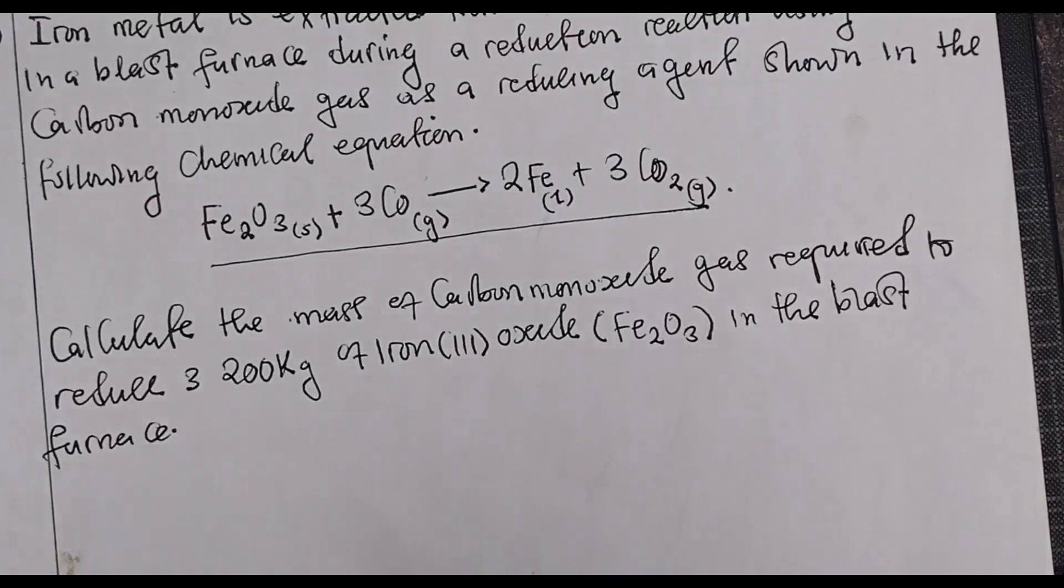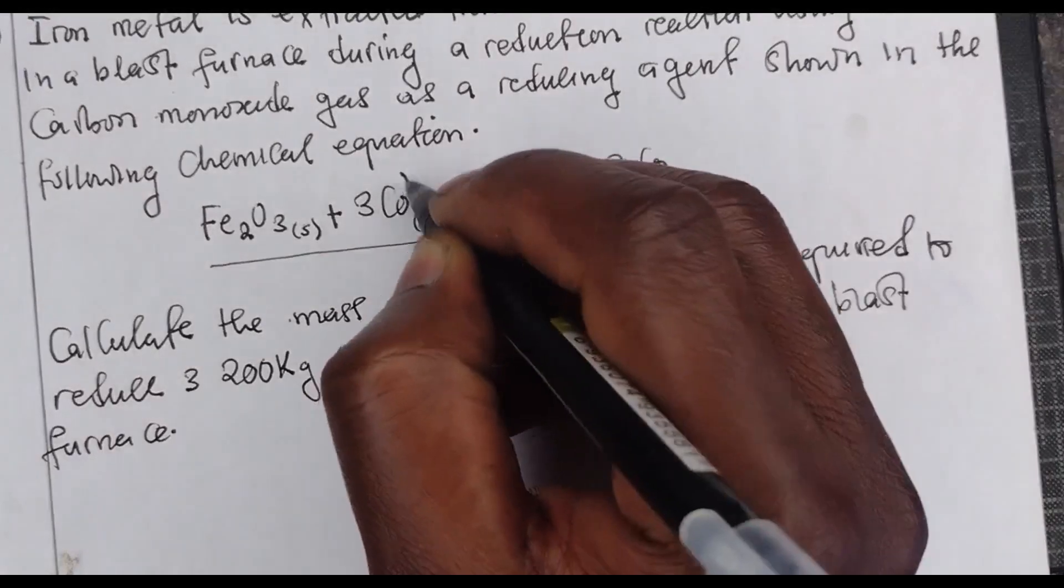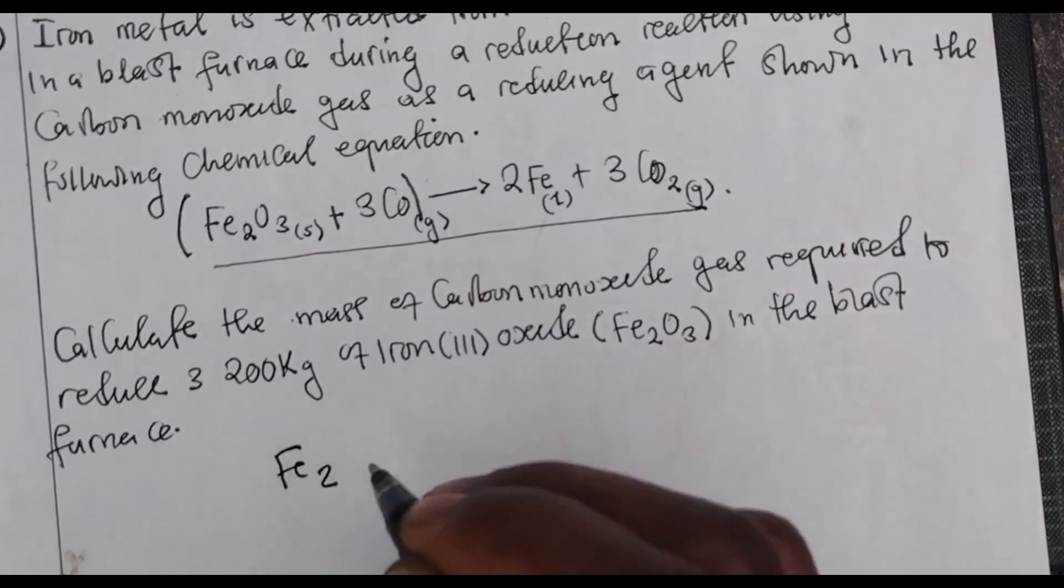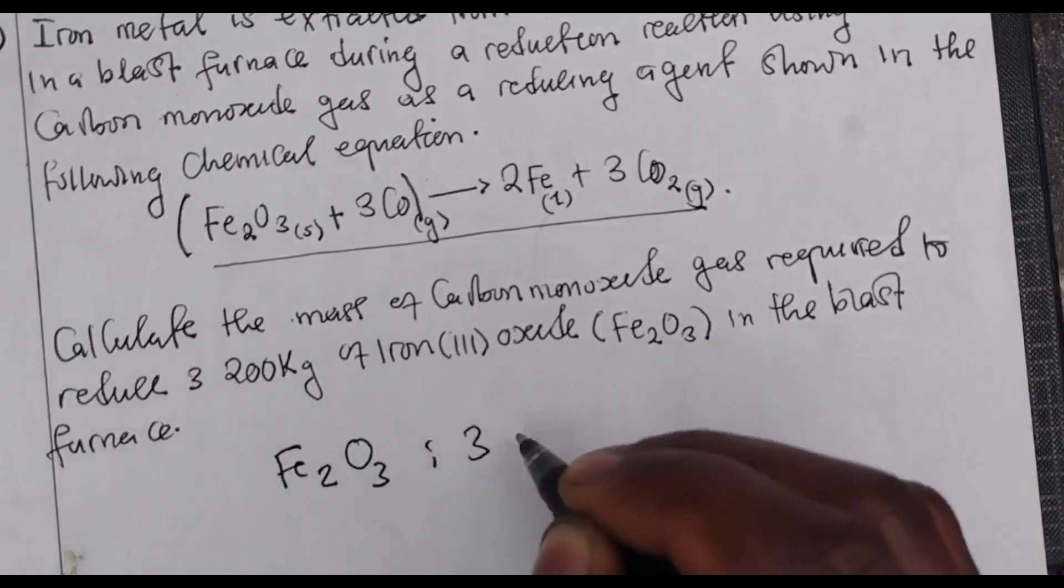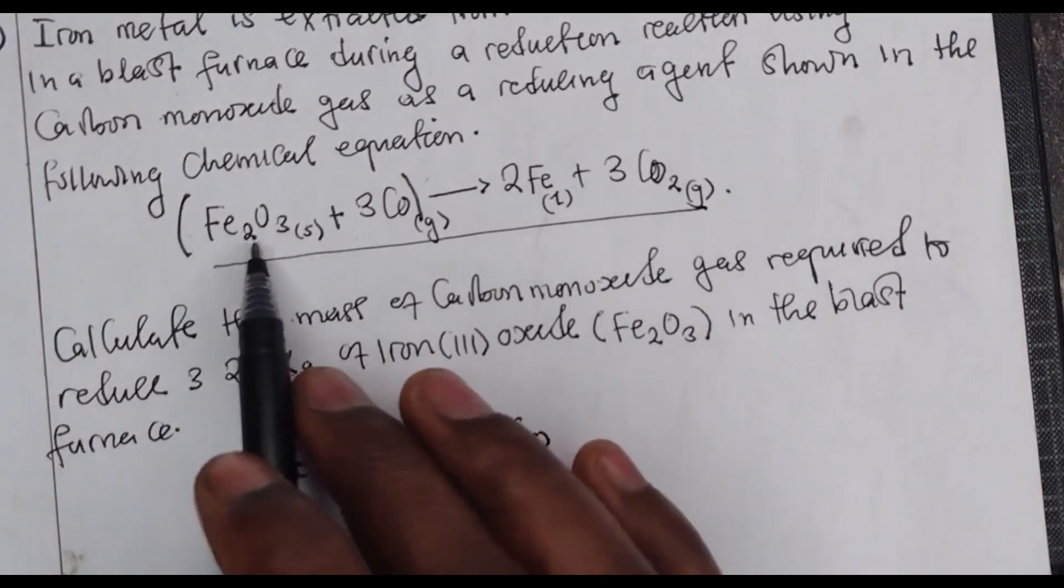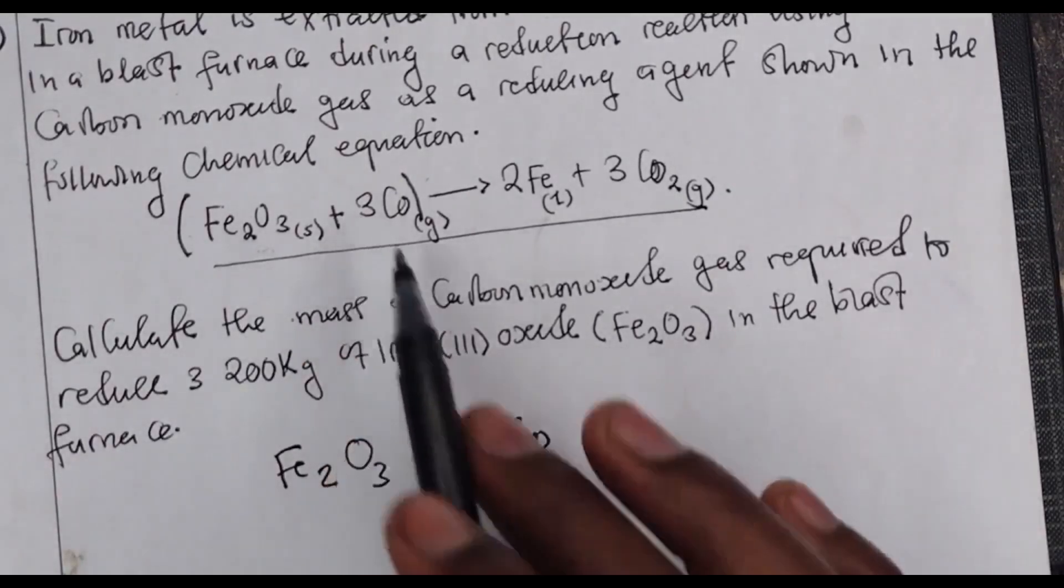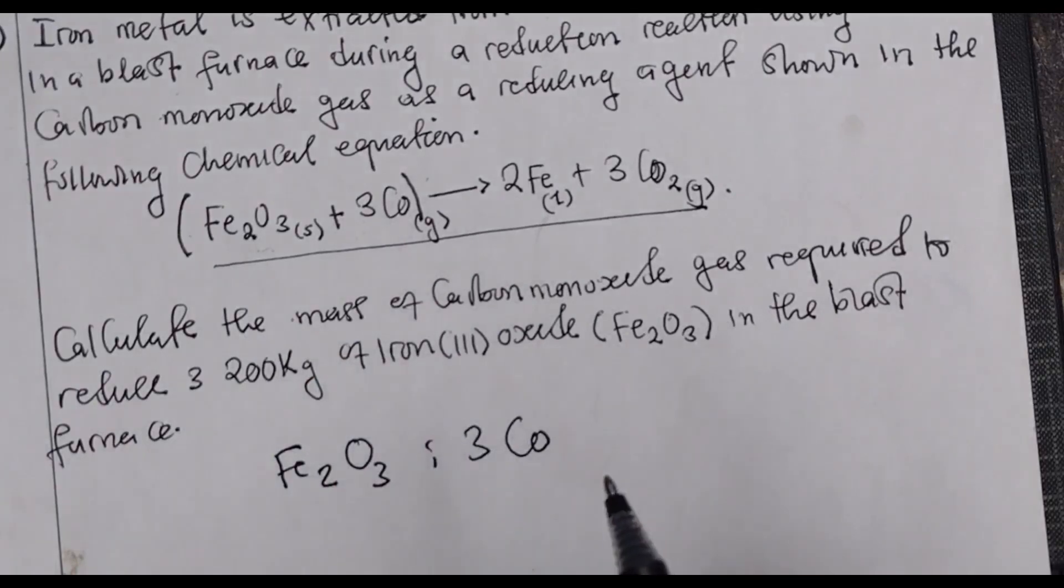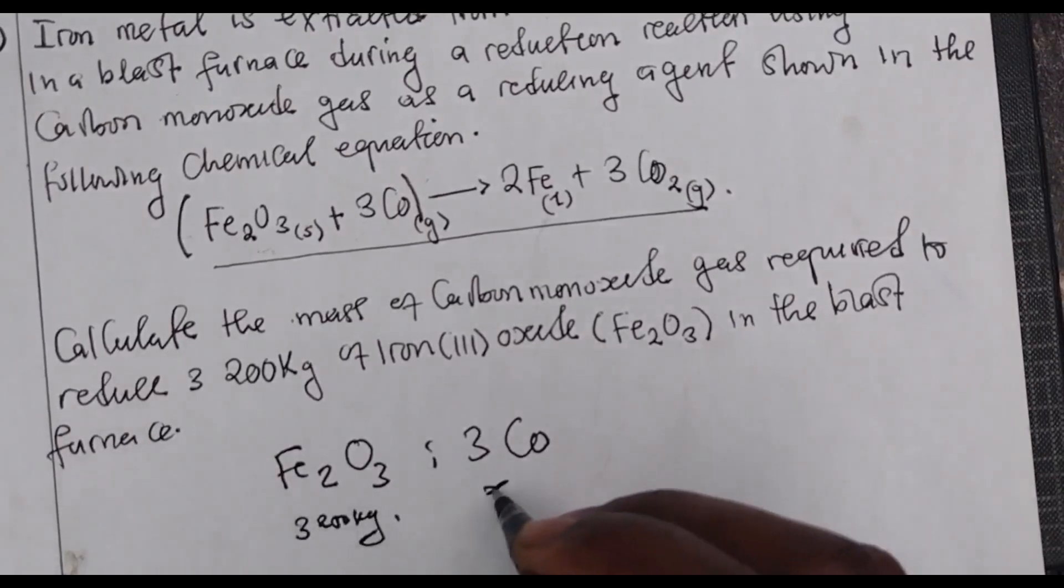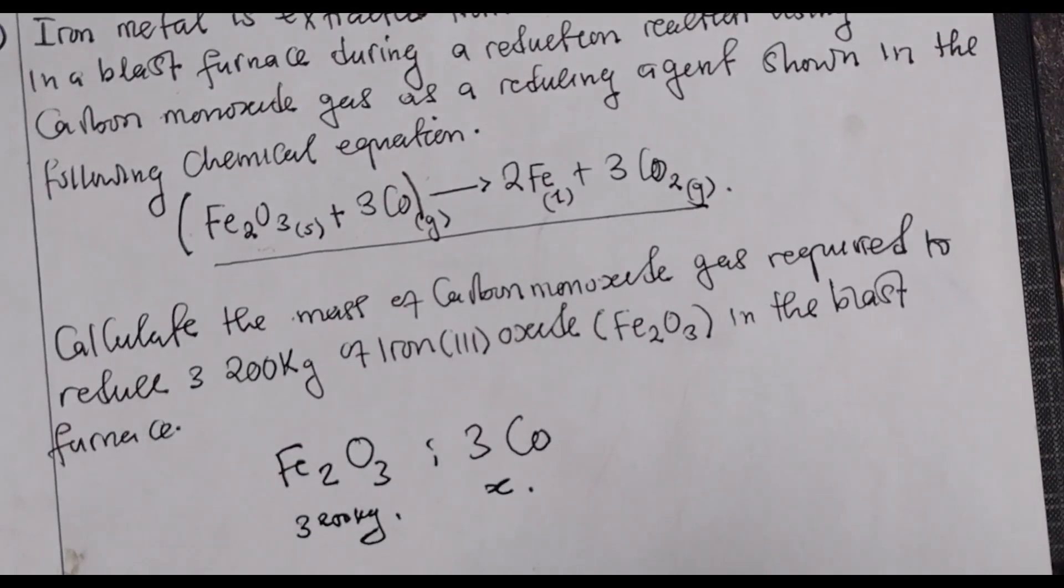In this case, we are looking at the relationship between iron oxide and carbon monoxide. The ratio is Fe₂O₃ to 3CO, because one mole of iron(III) oxide reacts with 3 moles of carbon monoxide. So we are finding mass. In this case, we're asking what about 3200 kg? We use the mass to mass ratio.